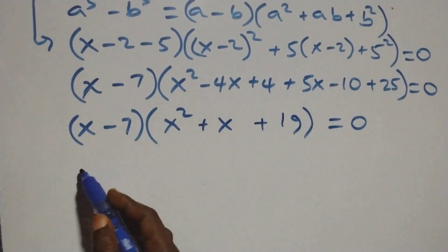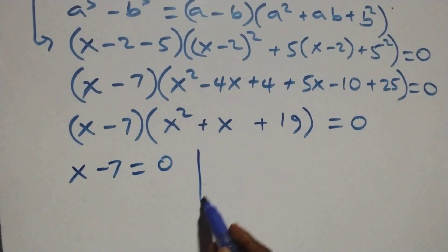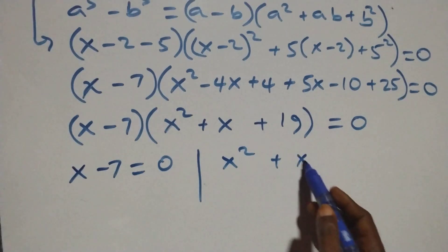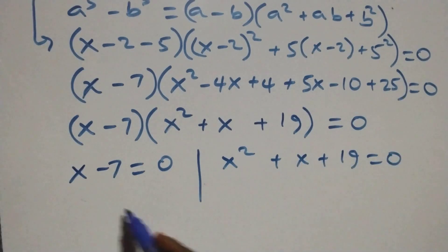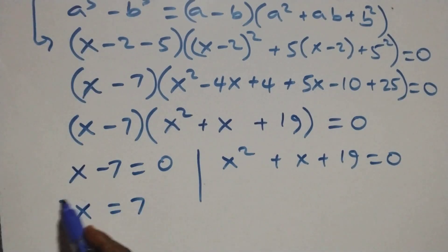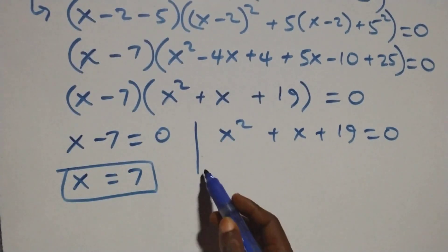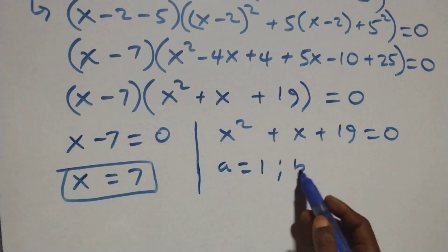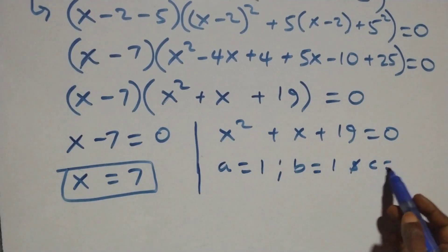Then we have two possible cases: x minus 7 equals 0, or x squared plus x plus 19 equals 0. From the first, x equals 7, which is a real solution. For the quadratic, a equals 1, b equals 1, and c equals 19.